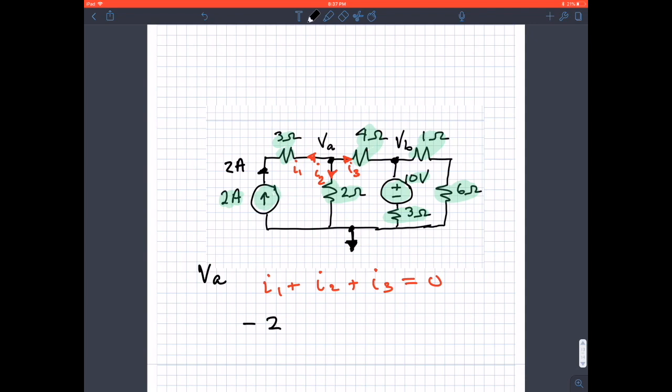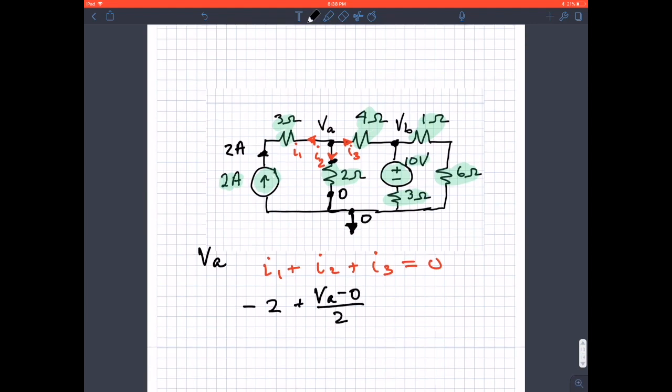To get I2, this voltage is zero. That's the reference, so this dot right in front of the 2-ohm resistance is on the line. That's still zero volts right there. On the other side of the dot is VA, so I2 is VA minus zero divided by two.